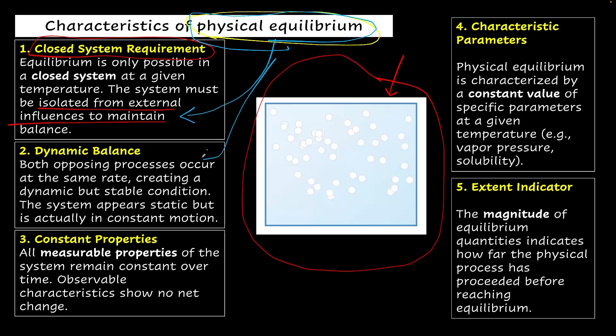You will have a dynamic balance. That means both processes occur at the same rate, which we spoke about multiple times. The system appears static, but is actually in constant motion. And we also observe that the properties are all constant. All the measurable properties are constant. Temperature, pressure, everything remains constant at the physical equilibrium state.